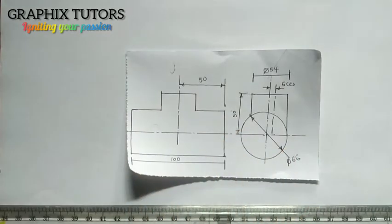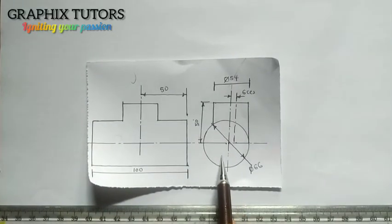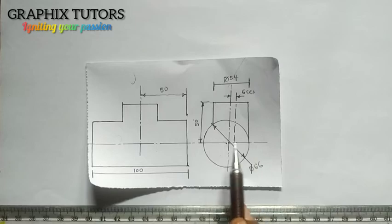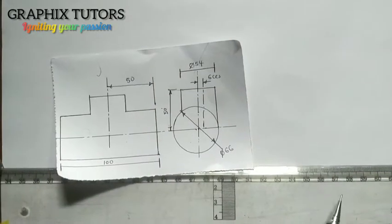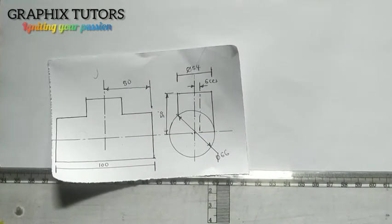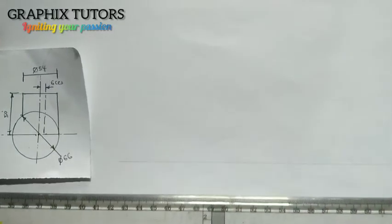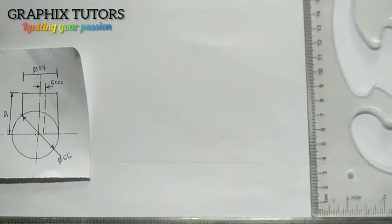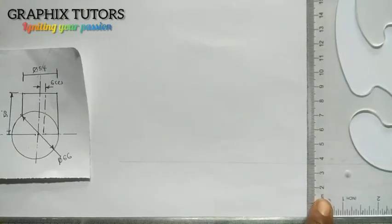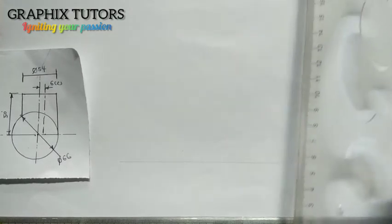So let's see how it goes. First of all, you need to replicate this diagram. You start drawing from the plan — this is the plan, and this is the elevation. So I start from the plan. You take your set square and draw a horizontal line, then a vertical line. That is what you do first.